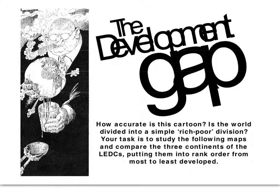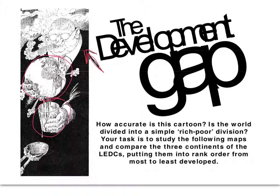The first thing is to take a look at this cartoon. It has two different elements. At the top, it represents the MEDCs — the symbolism shows they're powerful, exploiting the Earth, getting all the resources, and polluting it in the process. At the bottom, you've got the LEDCs, which are shown as very poor, weak, and vulnerable, just getting whatever is left over. The question is, to what extent does that actually represent the world?